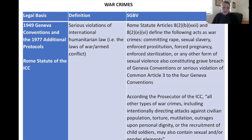The Geneva Conventions are replicated in part in the Rome Statute of the ICC, but with a more robust definition of rape and sexual violence. Rome Statute Articles 8(2)(b)(xxii) and 8(2)(e)(vi) define rape, sexual slavery, enforced prostitution, forced pregnancy, enforced sterilization, or any other form of sexual violence constituting a grave breach of the Geneva Conventions. The prosecutor of the ICC has also noted that all other types of war crimes — including intentionally directing attacks against civilians, torture, mutilation, outrages upon personal dignity, or the recruitment of child soldiers — may also contain sexual and gender-based elements.